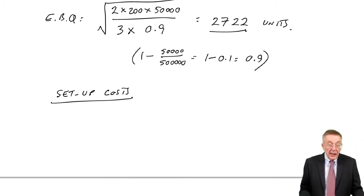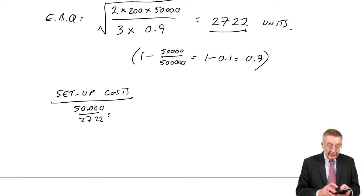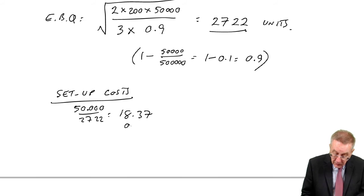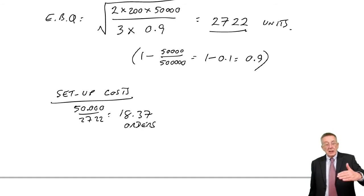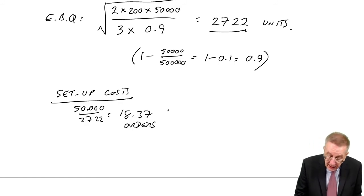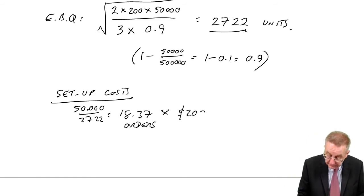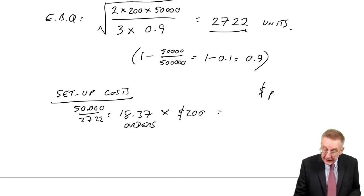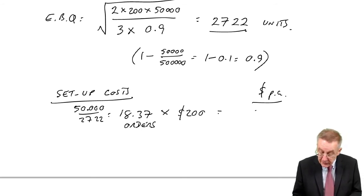And if we're ordering 2722 each time, how many orders will we need to place? Well, 50,000 divided by 2722 each time gives us 18.37 orders a year. And I did say in one of the earlier lectures, don't round that. Some years there'll be 19 orders, some years 18 orders, but on average, 18.37 a year. And the cost of setting up was $200 for each batch. So over a year, the setup costs 18.37 times 200 is $3674.